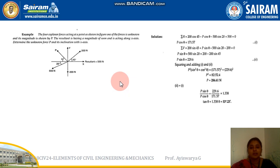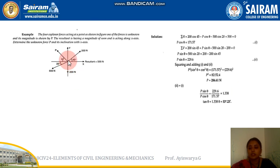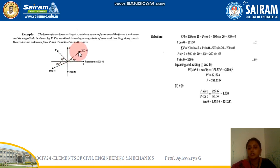Now I am going to explain the next numerical. In this problem, a figure with four coplanar concurrent forces is given — coplanar means all forces lie in the same plane and they all act at a single point. The forces are 200 Newton, 500 Newton, 200 Newton, and an unknown force P. We need to determine the unknown force P and its angle theta.